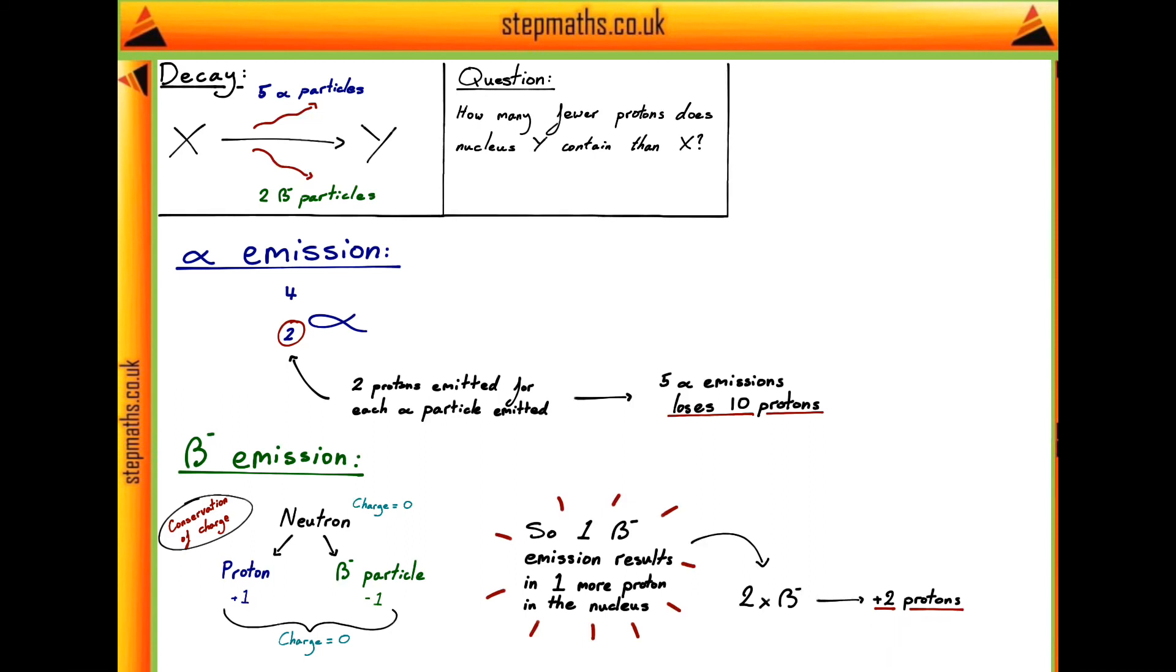Now that we've considered both of the different types of emissions, let's see what the difference in the number of protons is. So we lost 10 protons with the alpha emission, yet we gained 2 protons due to the beta minus emissions. Therefore, in total, we should have lost 8 protons, giving an answer of B.